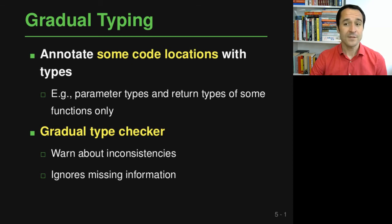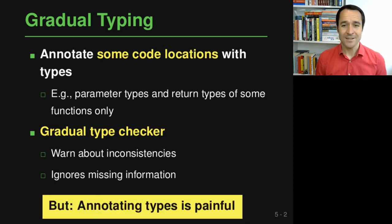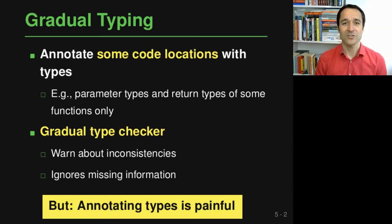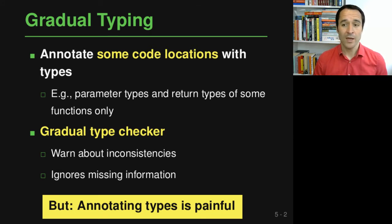While all of this is nice, annotating types is actually still pretty painful because it means going through a lot of already written legacy code and carefully reasoning about what the types of all variables, parameters, and functions might be. Doing this manually for a large codebase is a lot of work and not the kind of fun work that developers would like to do.